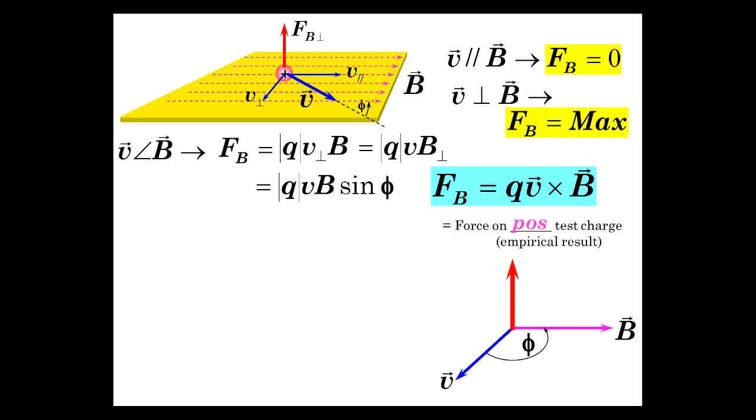So, if you do that right now in your mind's eye, you should get your thumb pointed in this direction. However, the motion was in the direction of V prime. Now, the angle looks like this.